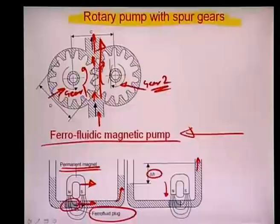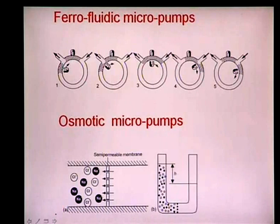When a permanent magnet is applied, there is a tendency for the ferrofluidic plug to move along with it, pushing the fluid past it and creating a pressure head difference δH supplied by the magnetic field coupling to the ferrofluidic plug.